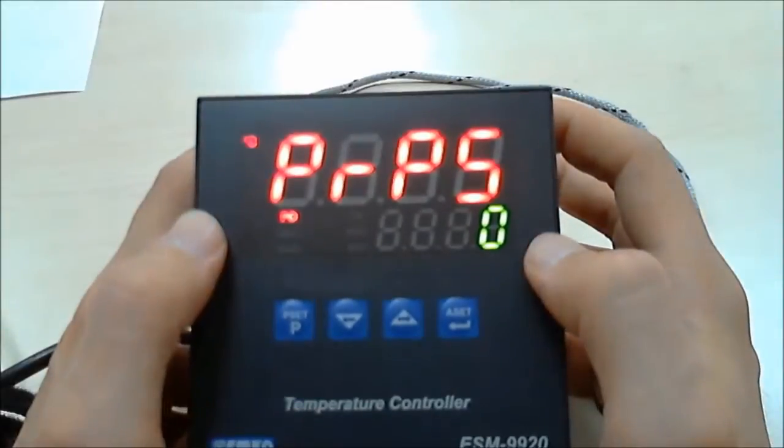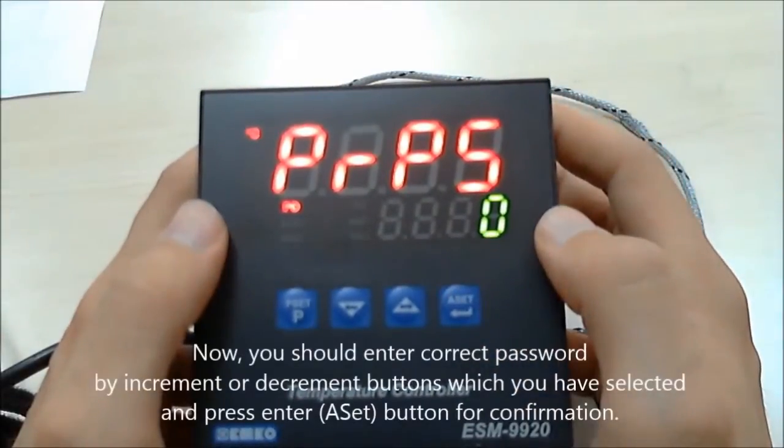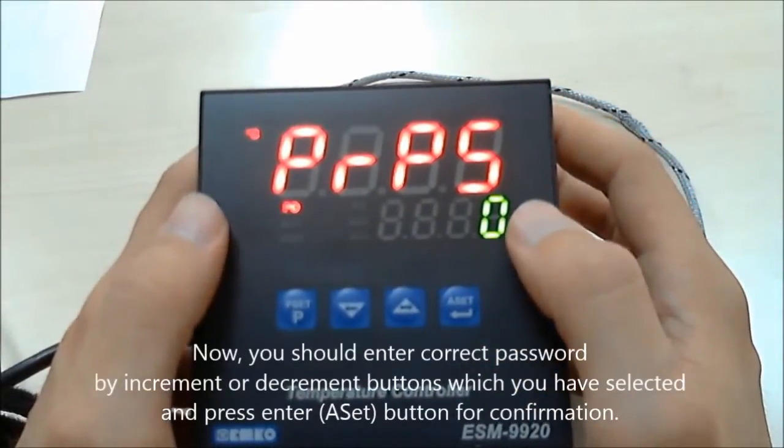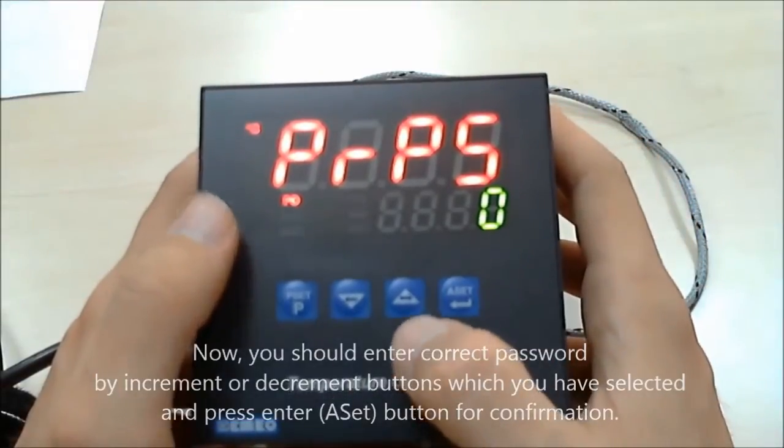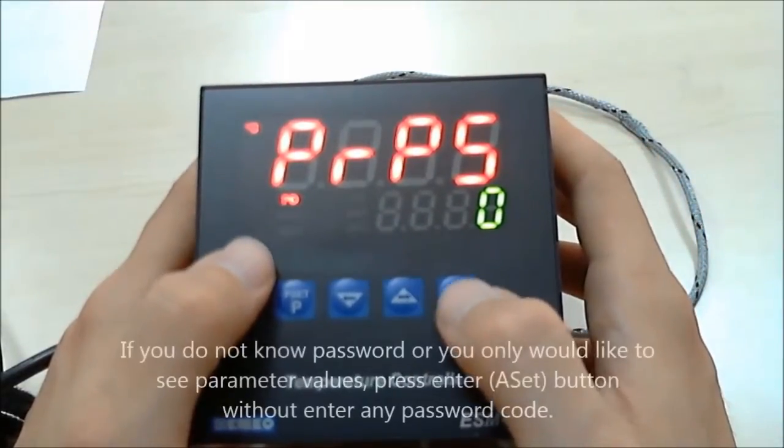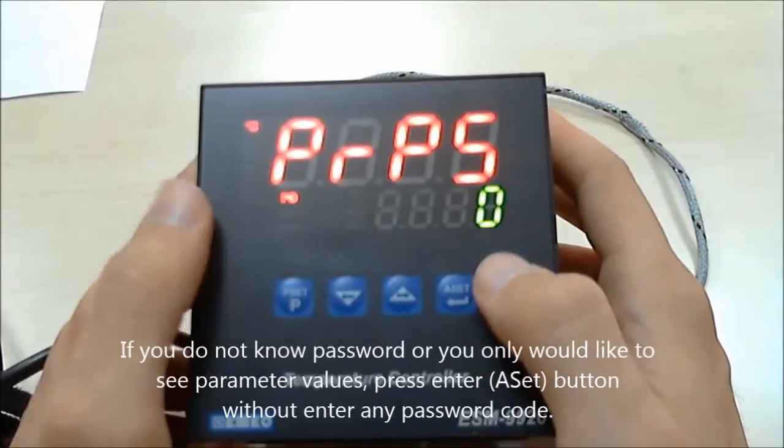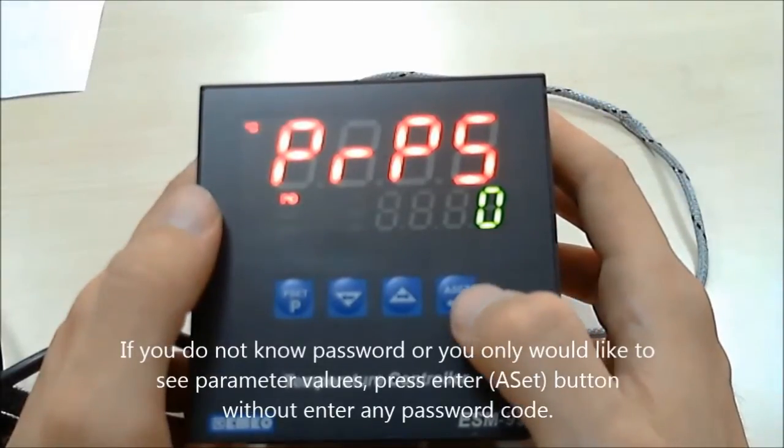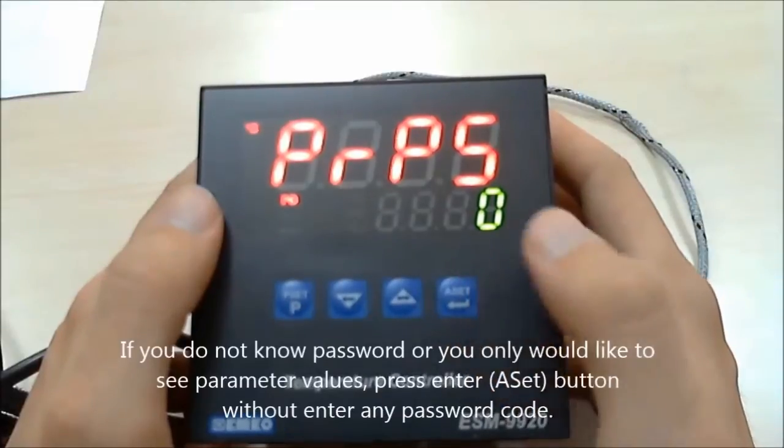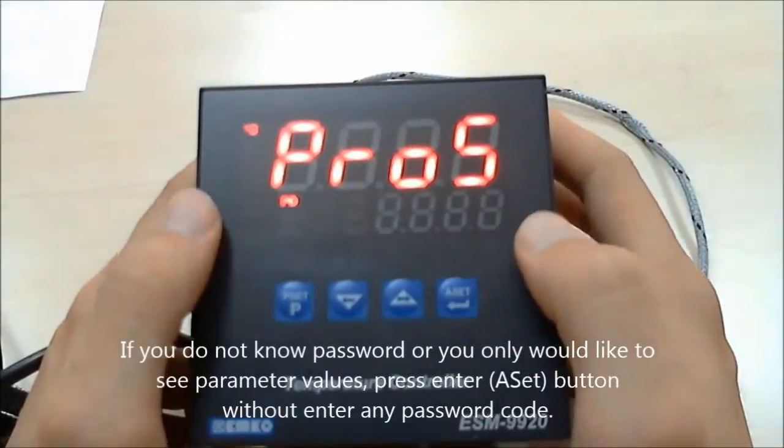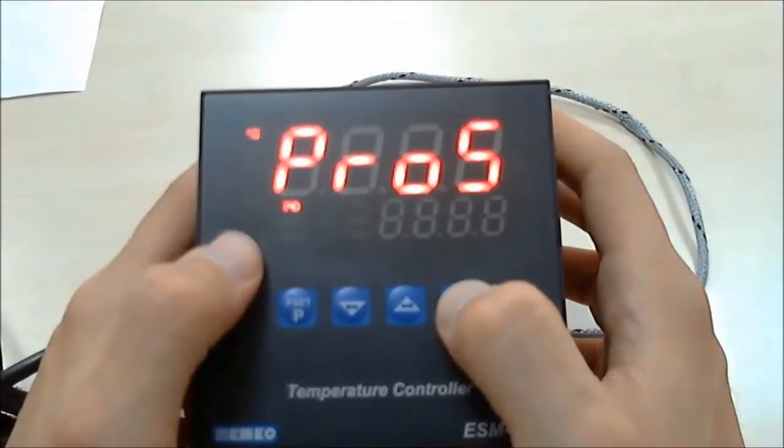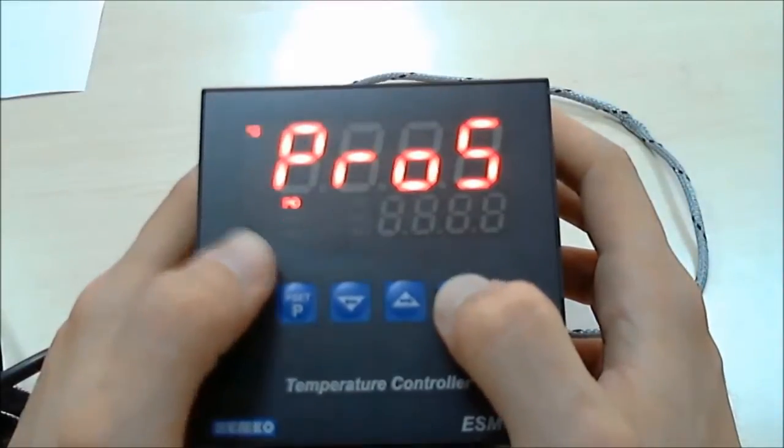As you see now, the device wants the password from us. If you don't know the password, but you want to only see parameters, press enter button. And then you can only see parameters.